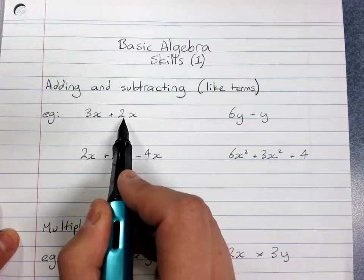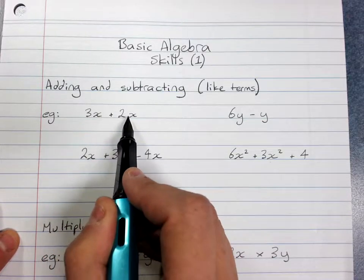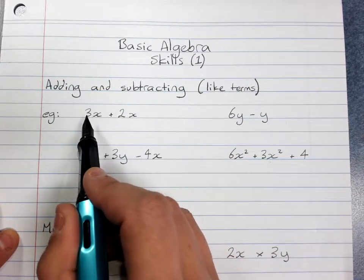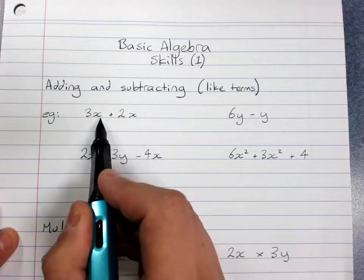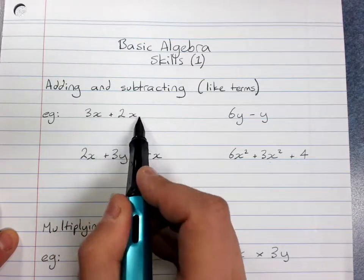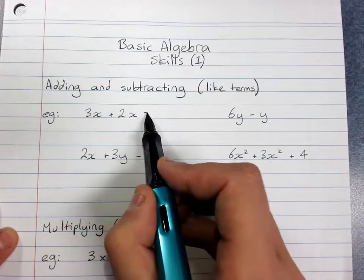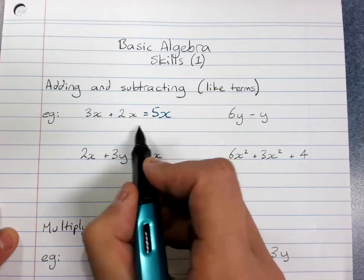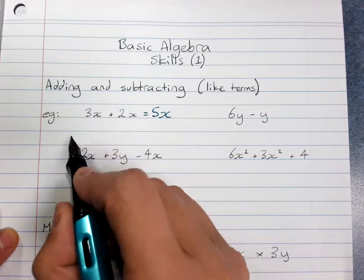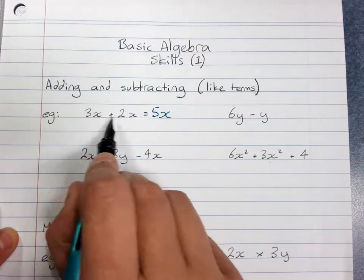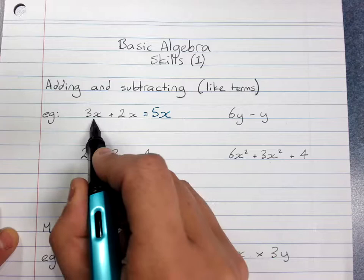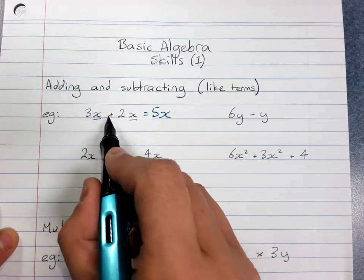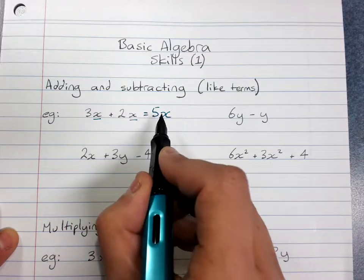This is 2x, which means 2 times x, or 2 lots of x. So when you see this, you say, I've got 3 lots of x plus 2 lots of x. How many lots of x do I have? I've got 5x. So we're just counting lots of a thing when we're adding and subtracting, and we can only group them up if it's the same thing. x is the same thing, so I've got 3 lots of x plus 2 lots of x is 5 lots of x.